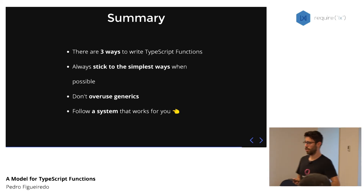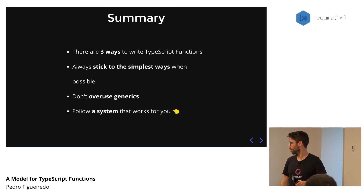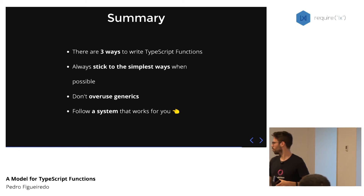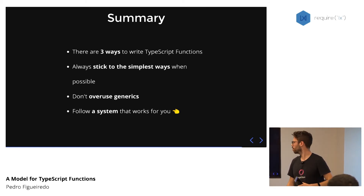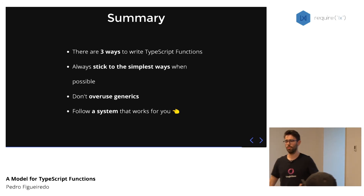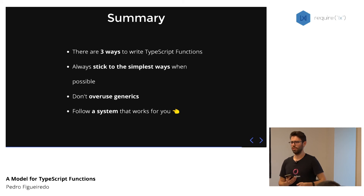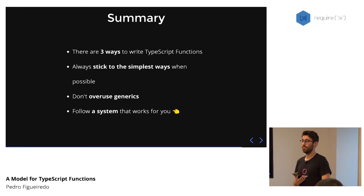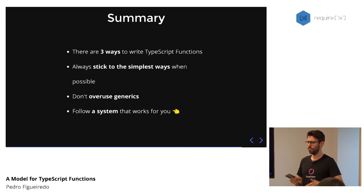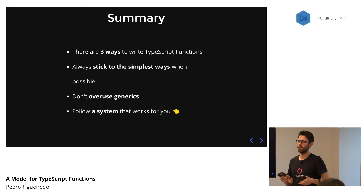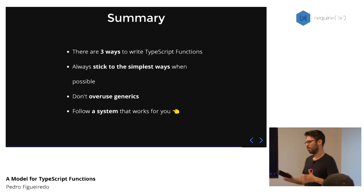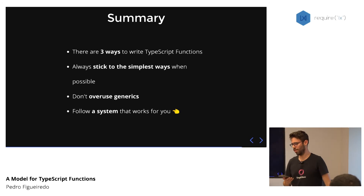To summarize: there are ultimately three ways to create TypeScript functions and type their parameters and return types. Always stick to the simplest one where possible — it's both my recommendation and what the TypeScript docs say. Don't overuse generics if you can avoid it, though sometimes it's inevitable — especially if you're creating open-source libraries where you need great developer experience. Ultimately, follow a system that works for you. If this one doesn't, change it, share it, and let's discuss it.